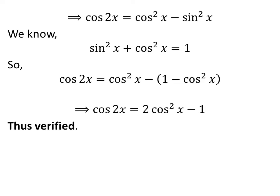Further simplification gives us cos 2x equals 2 cos squared x minus 1. Hence, verified the identity.